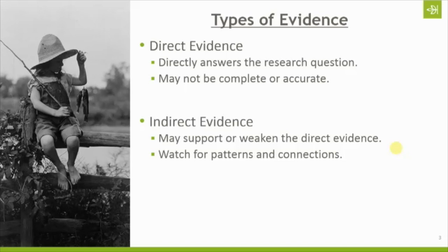Indirect evidence may support or weaken the direct evidence. For example, I'm looking for the parents of John Smith. His death certificate states directly that his parents are Thomas Smith and Mary Williams. But I have a death certificate for his older brother and a birth and death certificate for his younger sister, and their parents are listed as Thomas Smith and Mary Jones. So I have indirect evidence — an older sibling and a younger sibling — who have a different mother's name listed, and that weakens the direct evidence on the death certificate for my person.